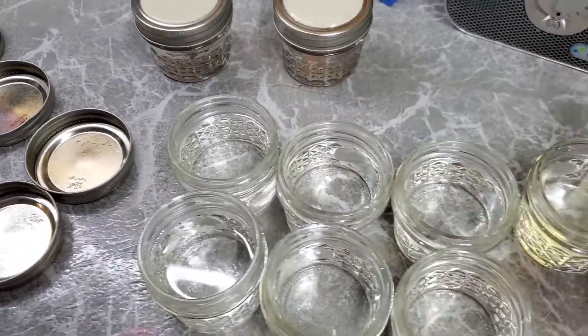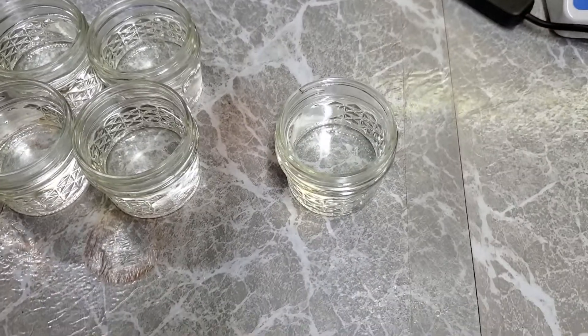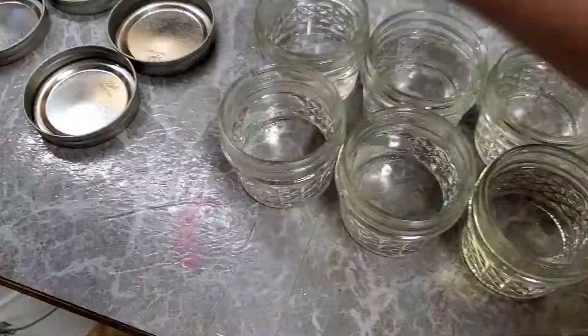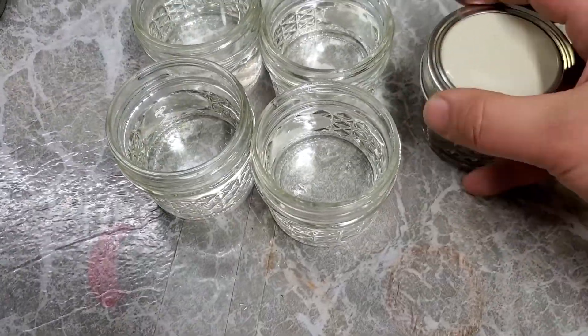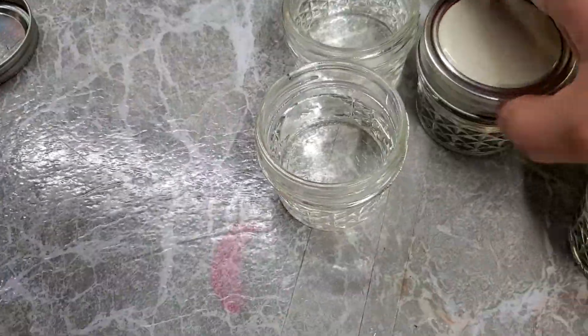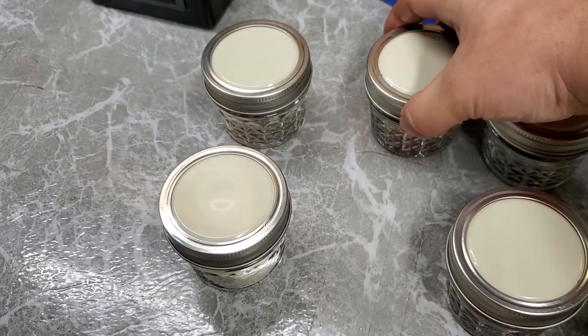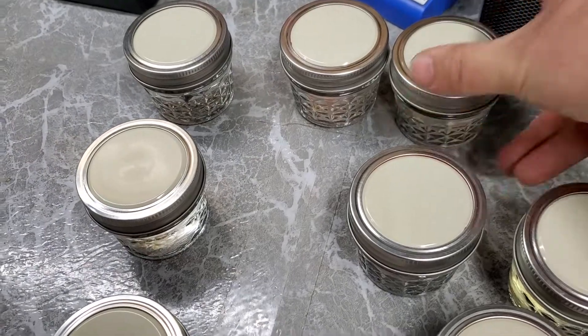Set that aside and do that for the rest of them. You don't have to absolutely tighten these to the point where you can't get them off again. Just hand tight is fine. All right. Now, since they are all sealed up, all we have to do is sterilize them.